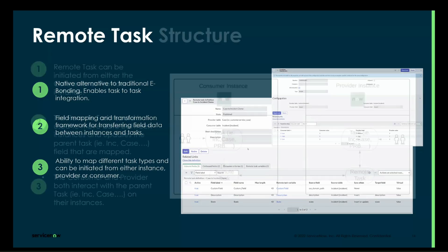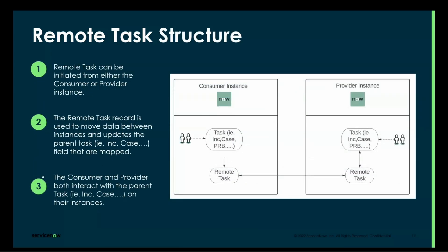In that case, the provider assigns it back and it creates a task on the consumer instance. This is what the remote task structure looks like. It can be initiated from either consumer or provider. The remote task is a unique record to Service Bridge and is used to move data and update the parent tasks according to the mapped fields. On the consumer side, say there's an incident; when it hits what we call the trigger condition, it generates the remote task and sends a create request to the provider side.